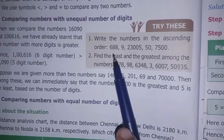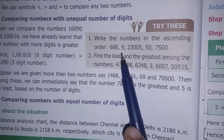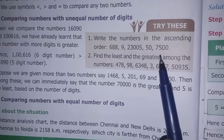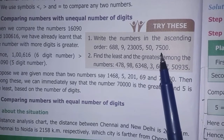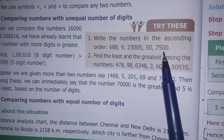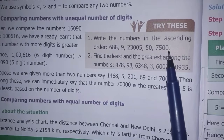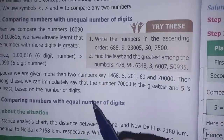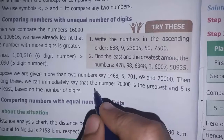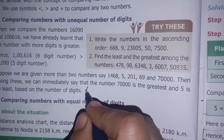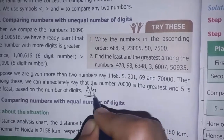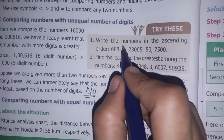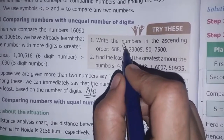We will write the numbers 688, 9, 2350, and 7500 in ascending order. It is easy to write. Ascending order is small to big. We write the first number as 9. This is the first number.